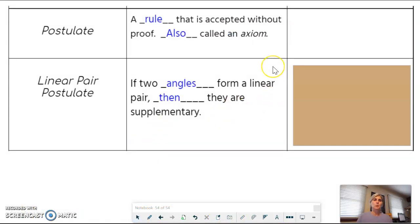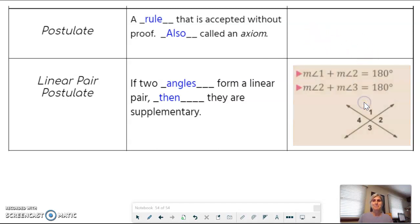A postulate is a rule that's accepted without proof. It's also called an axiom. So our first postulate that we're going to learn is a truth that can't be proven. If two angles form a linear pair, then they are supplementary. And so here's an example. And you can see angle one and angle two shown in the diagram. That's 180. Also, two and three equals 180. I'm just going to draw another example in here. You might want to draw that. I'm just going to show if two angles form a linear pair.